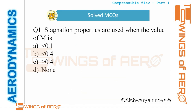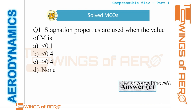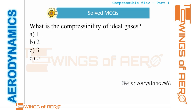MCQ 1: Stagnation properties are used when the Mach number is greater than what value? Stagnation properties are used in compressible flow. The answer is option C — greater than 0.3 to 0.4.